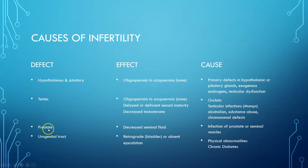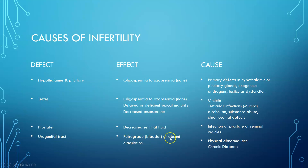If the defect is at the prostate level, you could have decreased seminal fluid, due to infections of the prostate or seminal vesicles. Not having enough seminal fluid makes it harder for the semen to reach the female. Defects of the urogenital tract include retrograde or absent ejaculation — where ejaculation goes into the bladder instead of out the penis — which can be due to physical abnormalities or chronic diabetes.